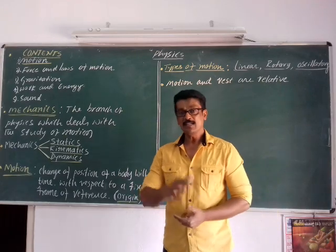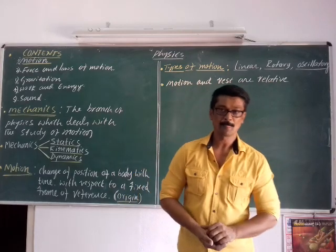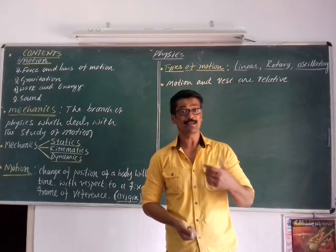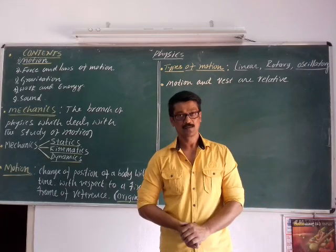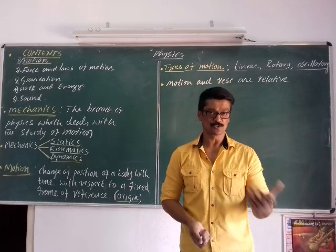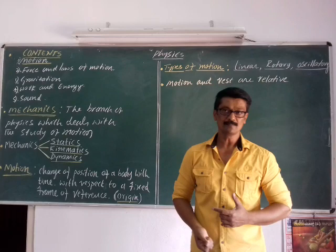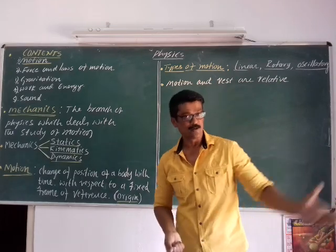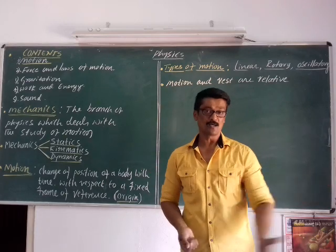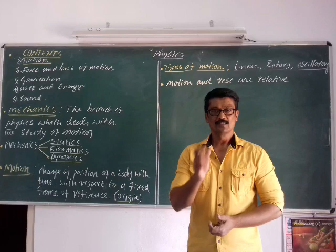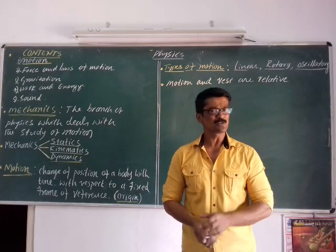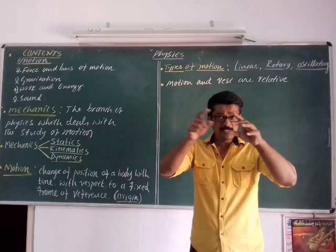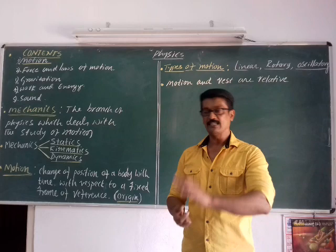Today let me take up the first chapter, that is Motion. If I ask you to give some objects which are in motion, you can give plenty of examples — a flying bird, a running horse, a moving car, flowing water, the oscillation of a pendulum, an oscillating swing, or vibrating strings of musical instruments. In all these examples, we make out the motion easily — just by seeing we say that it is in motion.